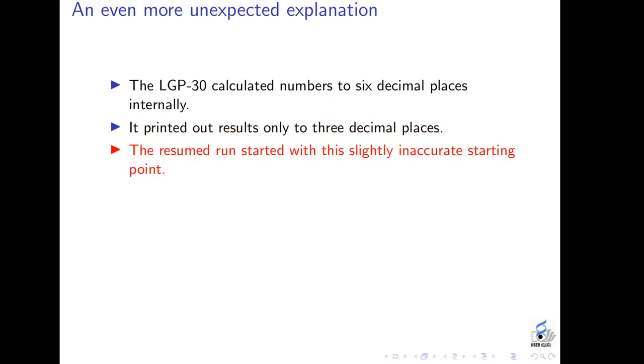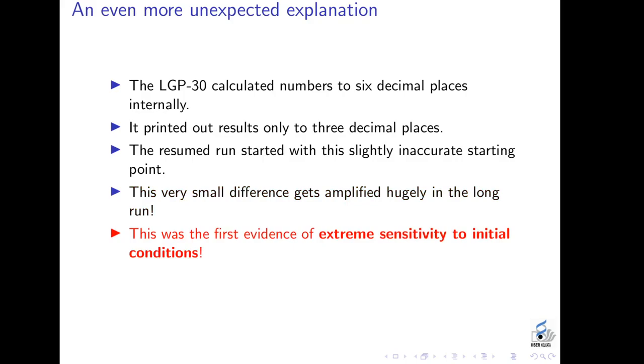This was a very small change. So the resumed run started with slightly different, I shouldn't really say slightly inaccurate, but slightly different starting points. And that made all the difference. This very small difference ultimately got amplified hugely in the long run. So this is the first evidence that we got of extreme sensitivity to initial conditions. And in this, the new science of chaos was born.